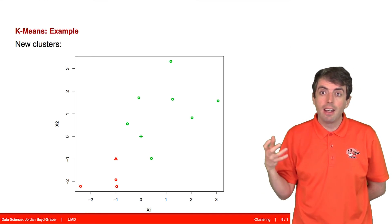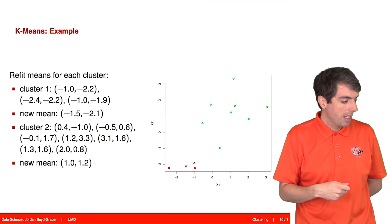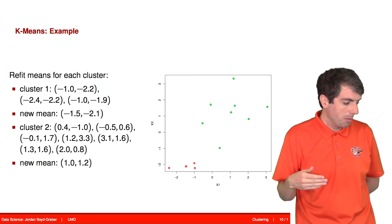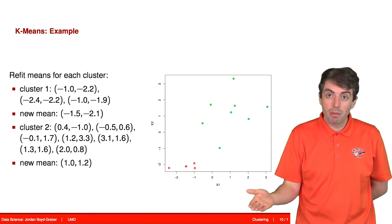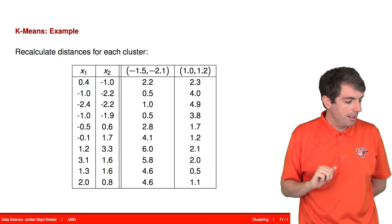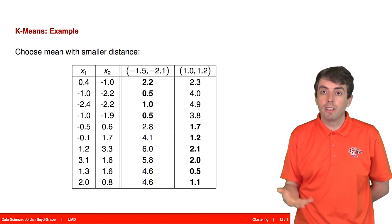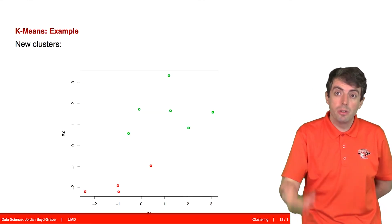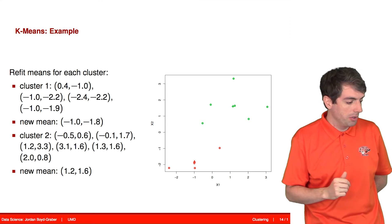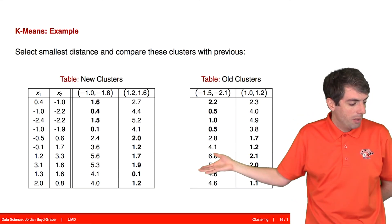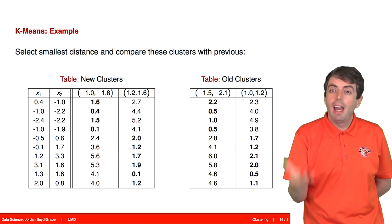Now that we've assigned points to each center, we compute the new centers by taking all points assigned to one center, averaging them, and doing the same for the other. This gives us a new mean of (-1.5, -2.1) and a new mean of (1, 1.2). We then repeat the process: compute distances to the two new centers, get a new assignment, recompute averages, and compare with the previous assignments. If they don't change, we're finished.